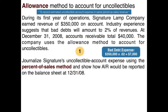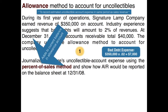One thing to keep in mind: the two allowance methods act differently. This is the percent of sales method; the other is called the aging schedule, which we'll cover in a following video. The percent of sales method actually adds to the current balance in your allowance account — it's very important to note because the aging schedule doesn't act that way. So the percent of sales method will increase that balance in most cases.